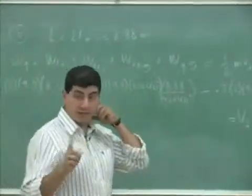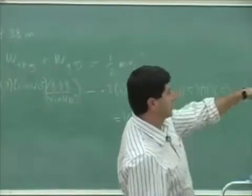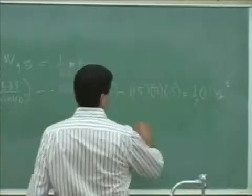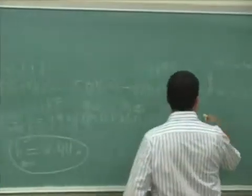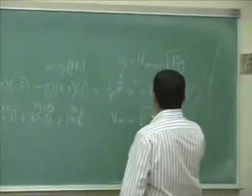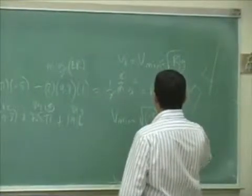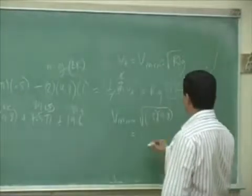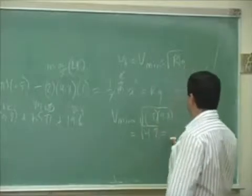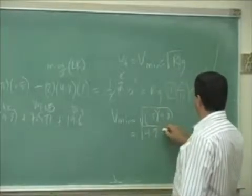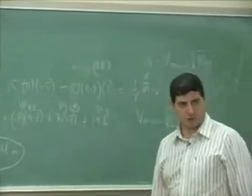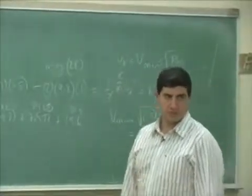Now we solve for what is the final velocity at the top. The answer you get should be greater than square root of Rg, since that was v-min. Square root of Rg is square root of 0.5 times 9.8, so v-min equals square root of 4.9, which is approximately 2-point-something. So the answer you should get should be greater than 2.